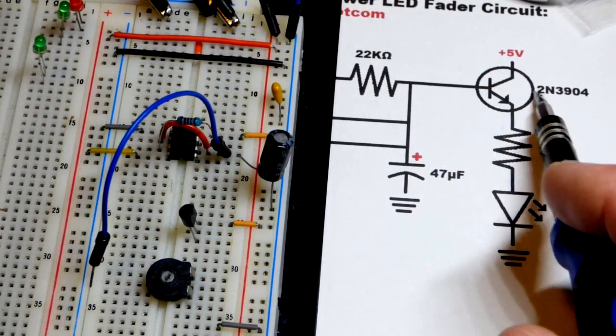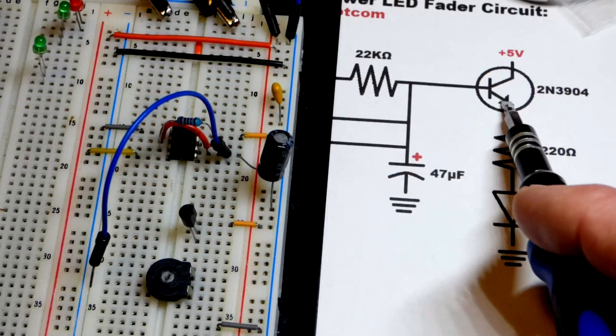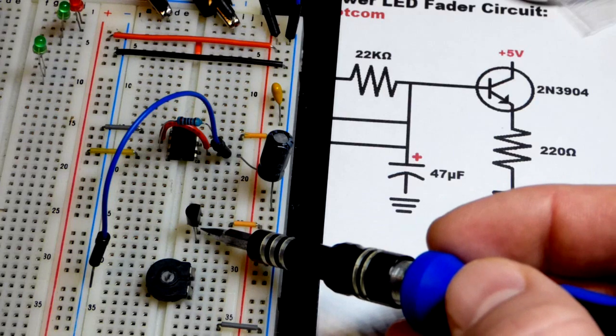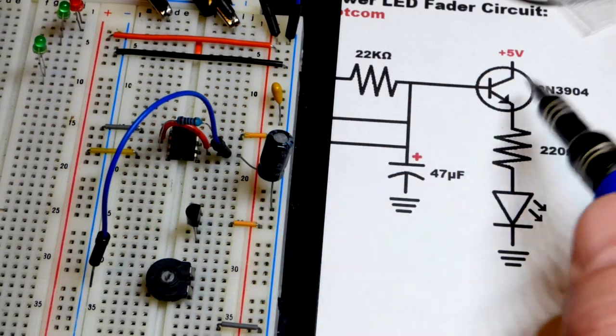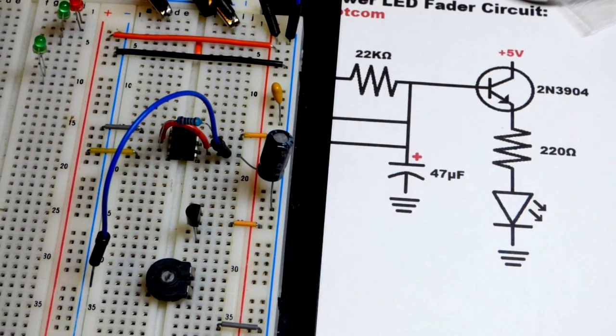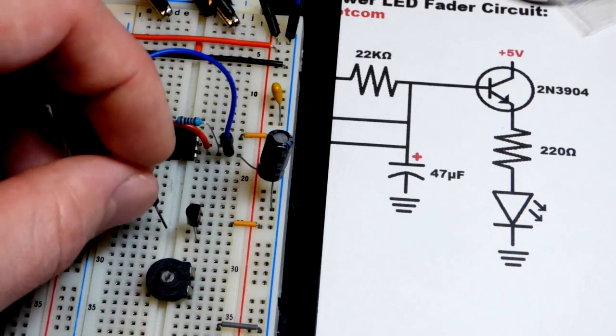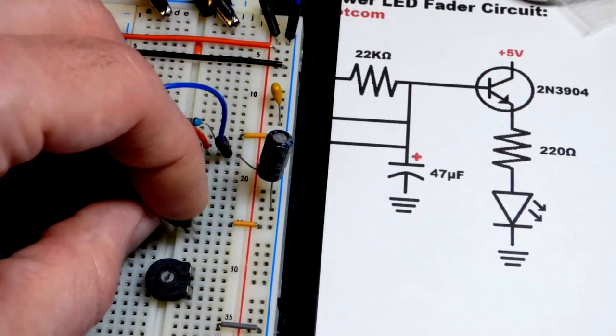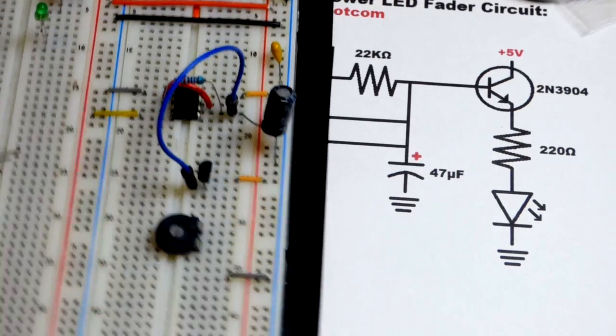You have to use an NPN bipolar junction transistor in this configuration. If it starts with 2N, the emitter is that left pin or bottom pin there, the base is the middle pin, and the collector is the top pin. That's if the first number and letter are 2N. We're going to put this to the middle pin, the base right there of the transistor.